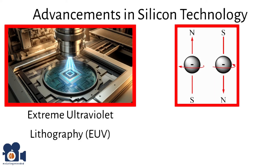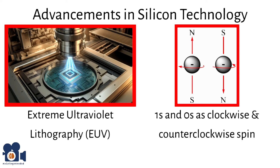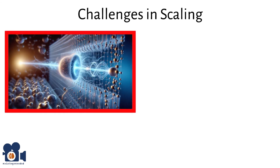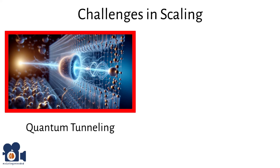Furthermore, it is speculated that representing 1s and 0s as clockwise and counterclockwise spin of electrons may help speed the process along as well. However, there are several challenges in scaling the semiconductor process. One major challenge is quantum tunneling — a quantum mechanical phenomenon where particles pass through a potential barrier they classically shouldn't be able to cross. Electrons can tunnel through thin insulating layers, leading to leakage currents and power inefficiency. As transistors shrink to the nanometer scale, quantum tunneling becomes a significant issue.